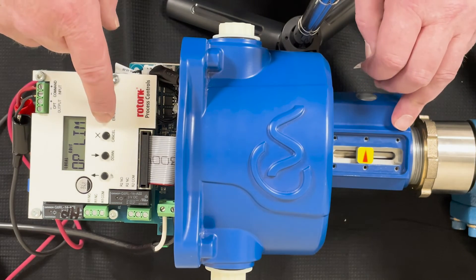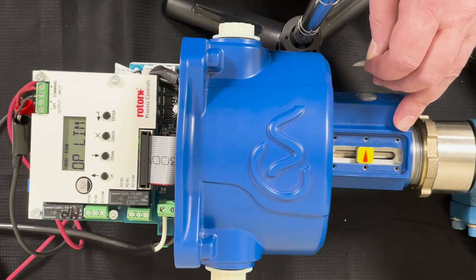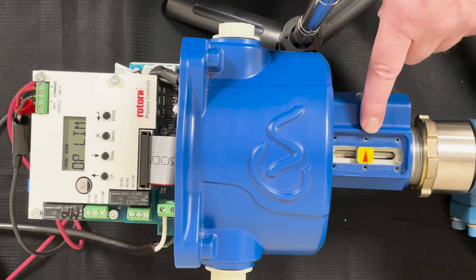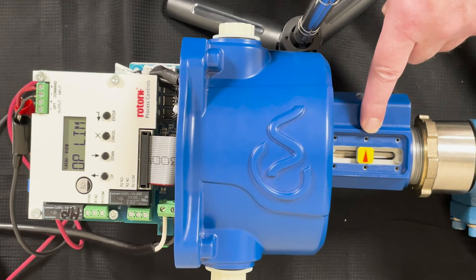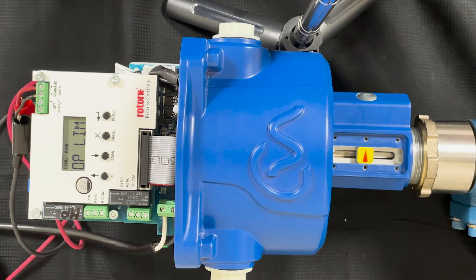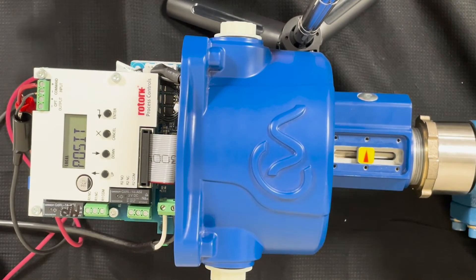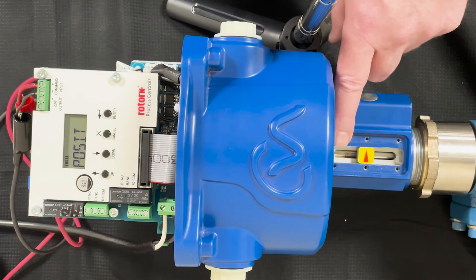Once we saved it, now your 4 and 20 are set, with 4 being zero and 100 being 100 percent of flow. Now to check your 4 to 20 signal and your span on zero and 100, we must put this back into remote.